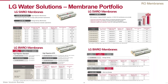Today, LG Chem produces a full line of seawater and brackish water thin film nanocomposite reverse osmosis membranes that can be selected for various applications. We offer the highest rejection seawater membranes in the market — the so-called G2 membranes with 99.89% rejection — and a broad spectrum of brackish water membranes varying from high rejection membranes with 99.78% rejection and anti-fouling membranes to low and ultra-low pressure membranes. For details, you can visit our website to see all specifications.